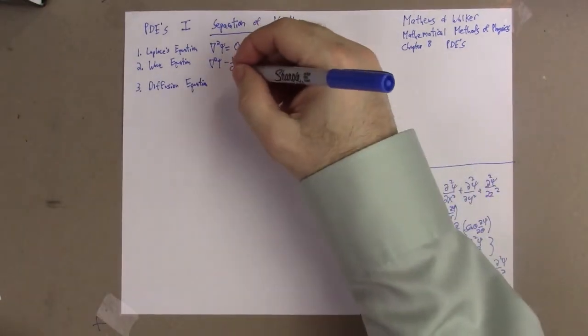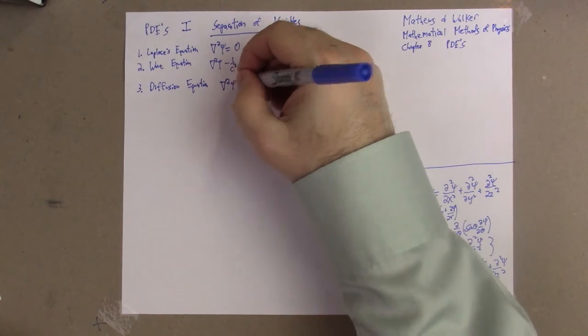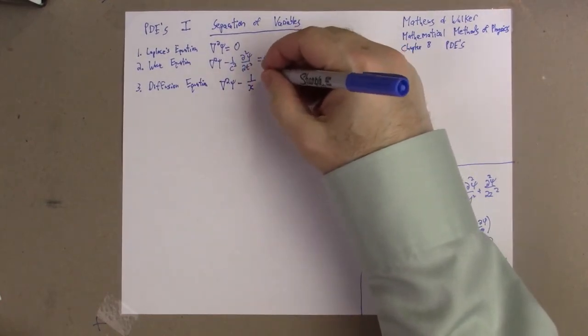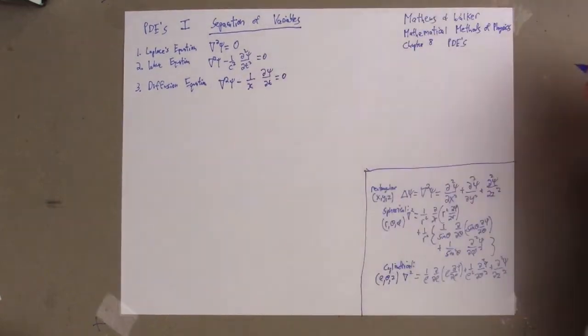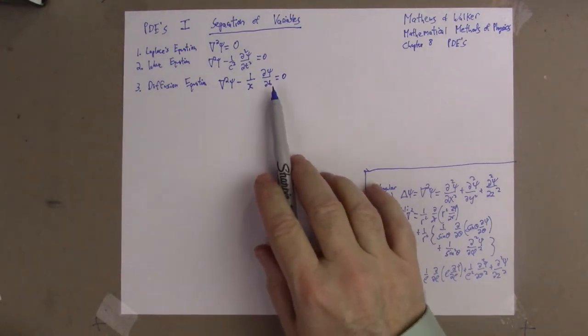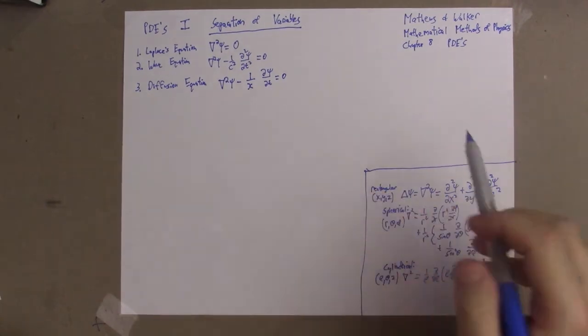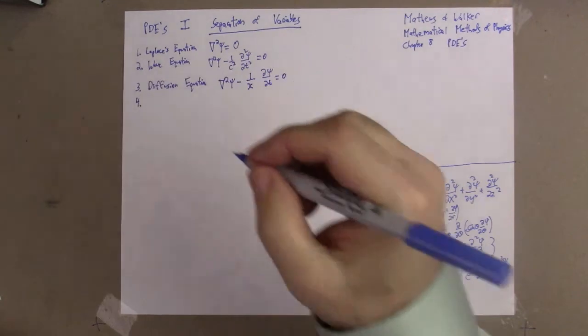The third type of equation we'll look at is the diffusion equation. Here we'll write the diffusion equation as del squared psi minus 1 over kappa times the partial of psi with respect to time equals zero. As you can see, the spatial part of it is the same, but the time part is only first order, and that makes all the difference in the world.